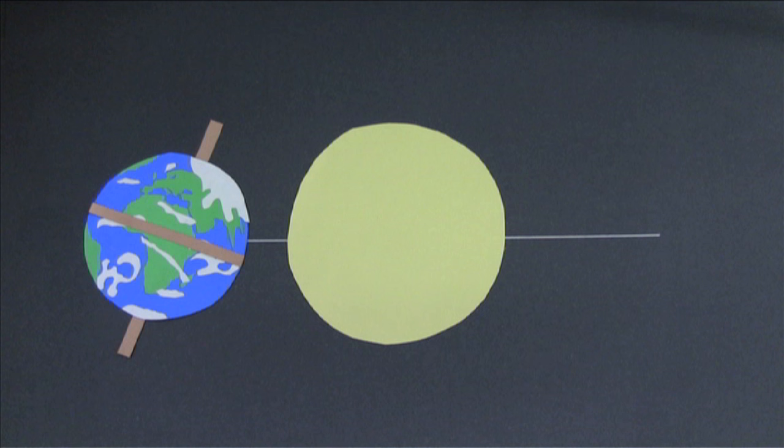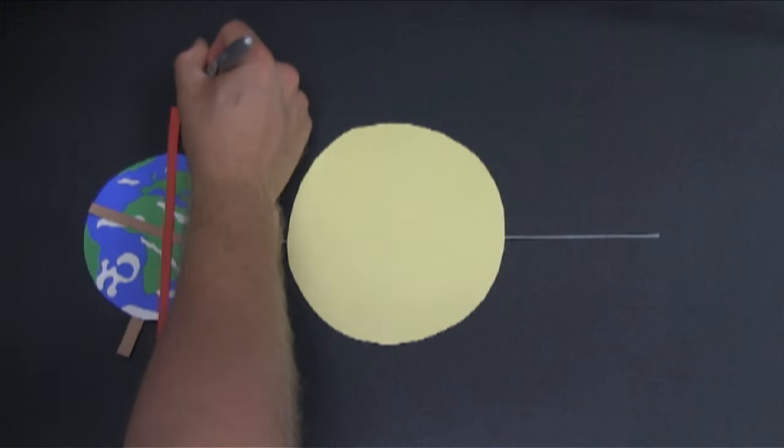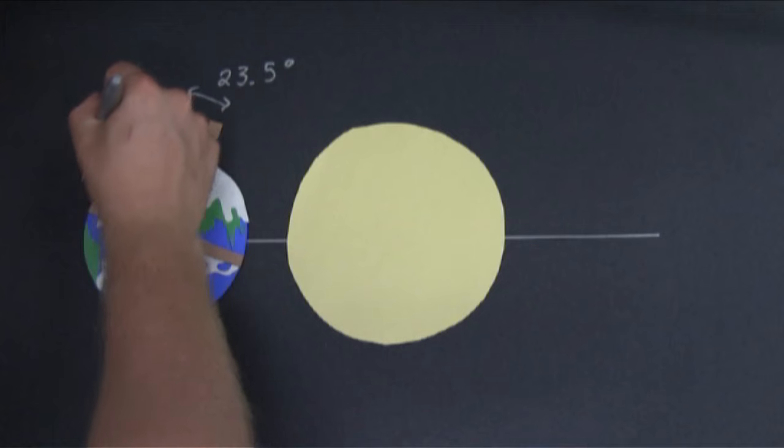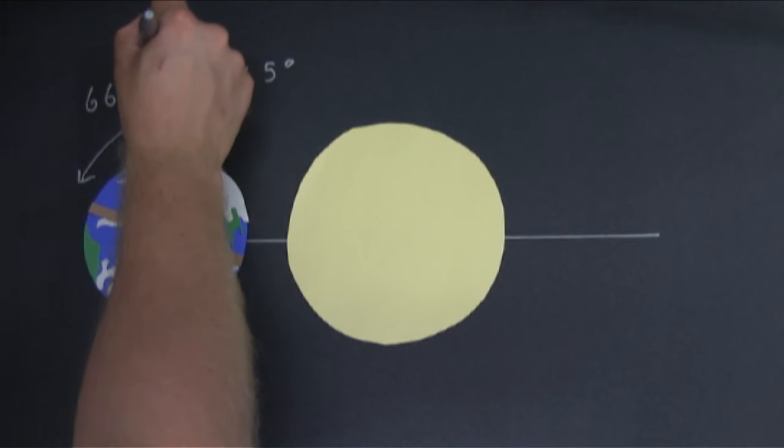At this point in the Earth's revolution, the northern hemisphere is at its maximum inclination towards the sun. This is called the June solstice. Let's put a line through the Earth that's perpendicular to the orbital plane. We know that this angle here is 23.5 degrees. That means that this angle here between our vertical line and the equator is 90 minus 23.5 degrees. That's 66.5 degrees.